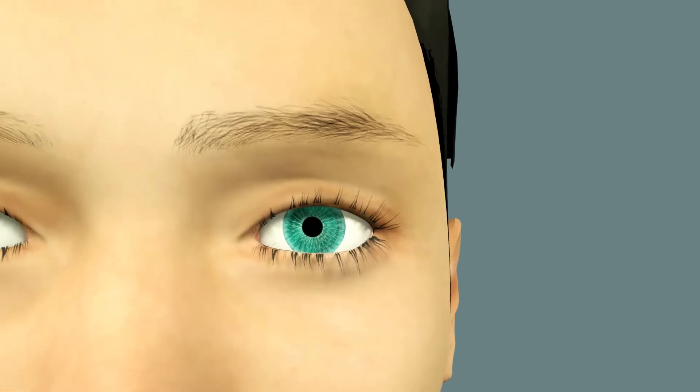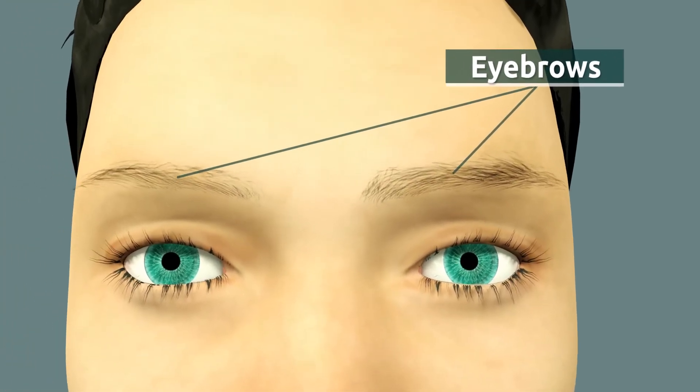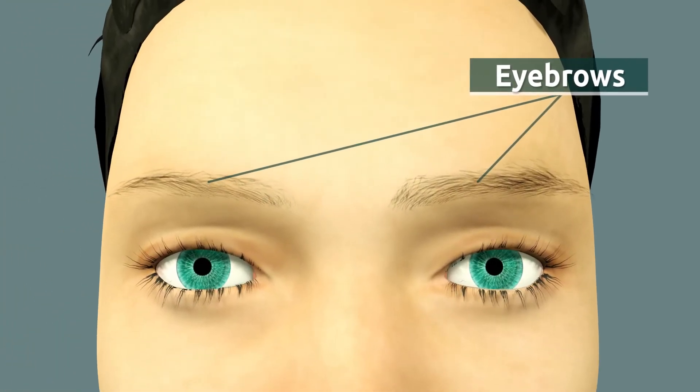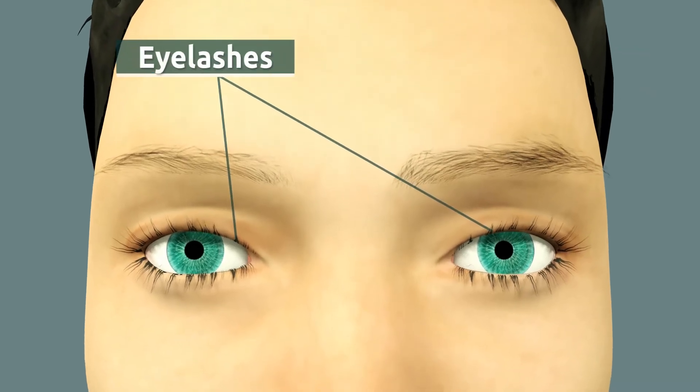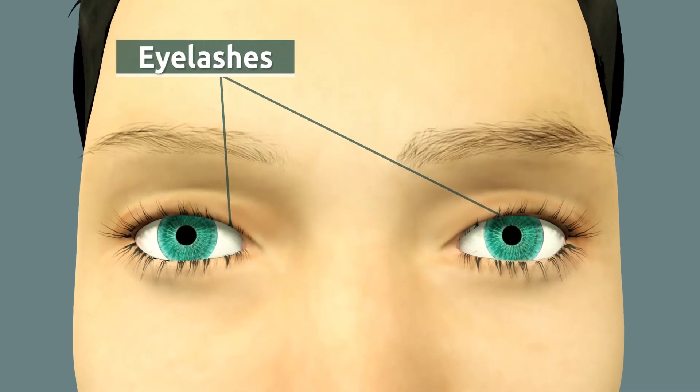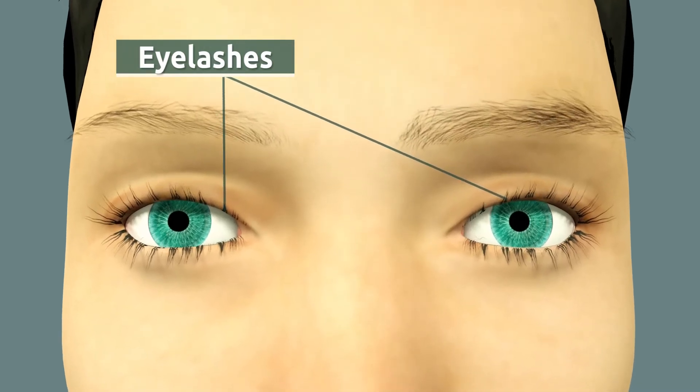The function of the eyebrows is to protect the eye from sweat or rain. The function of the eyelashes is to protect the eye from dust or sand. Did you know that eyelashes also shield our eyes from direct sunlight?